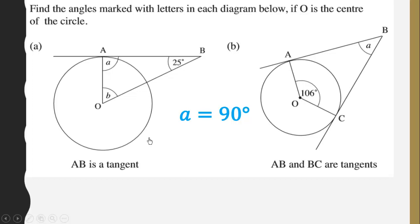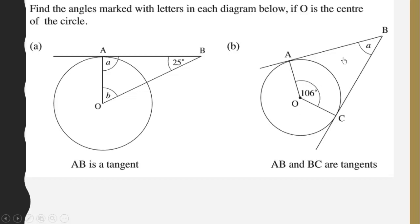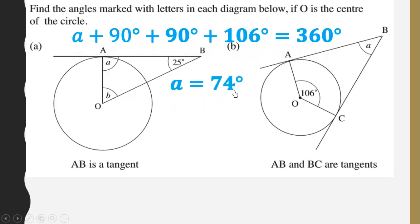Then we can find B: B plus 25 should give us 90 degrees, so B will be equal to 25 degrees. Now this is a tangent again, and this is also a tangent, so they must make an angle of 90 degrees each. We know this is a quadrilateral ABCO, so the sum of angles in the quadrilateral should give 360 degrees, and we solve to arrive at 74 degrees. We have revised the angle that a tangent and a radius make, which is a right angle.